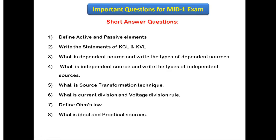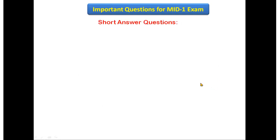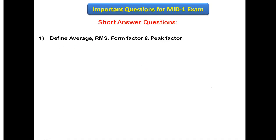The next question is: what are ideal and practical sources? First write what is an ideal source and what is a practical source, and what are the different ideal and practical sources. The next question is: define average value, RMS value, form factor, and peak factor.